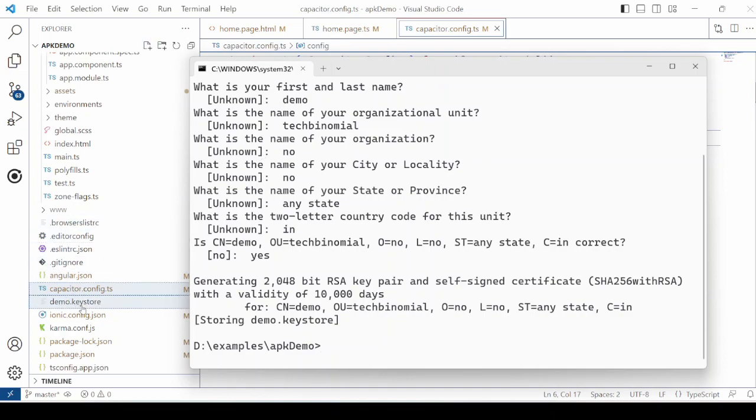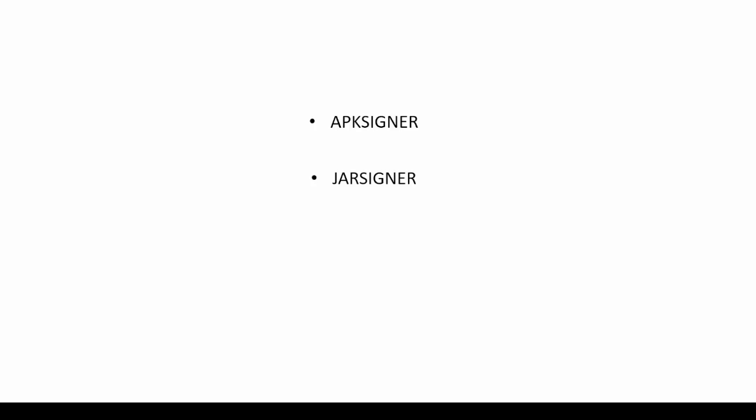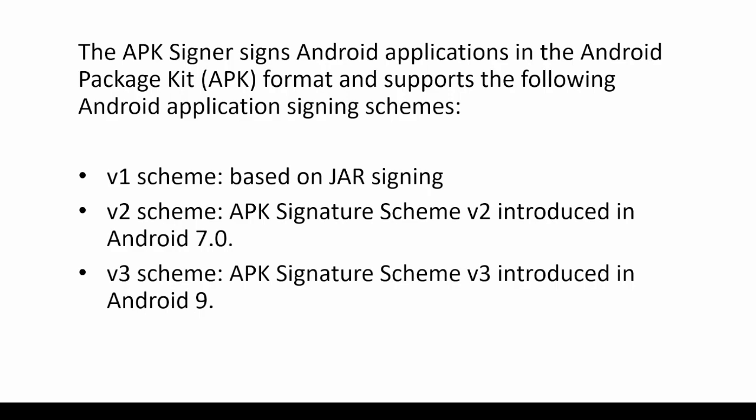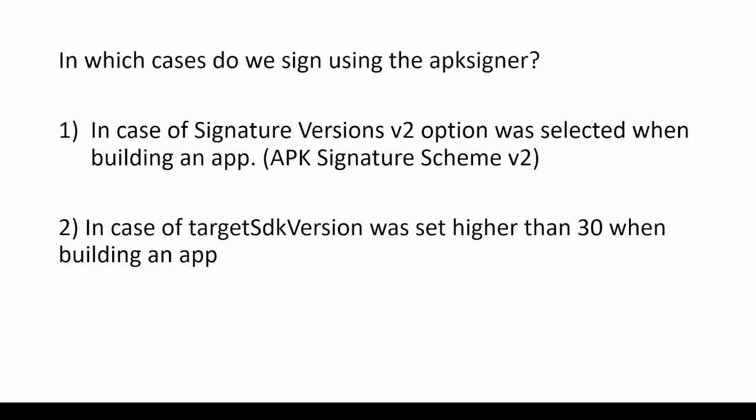In the root project directory, you can see the demo.keystore file is generated. Two options are available for signing: APK signer and jar signer. For APK signature scheme V1, use the jar signer. For V2 and V3 APK signature schemes, use the APK signer. If the application's target SDK version is higher than 30, then in that case also use the APK signer to sign the APK.